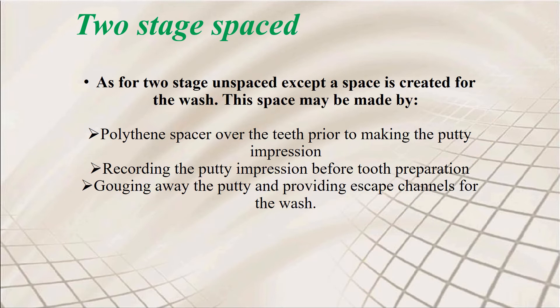Coming to the third technique — the two-stage spaced technique. This is the same as the two-stage unspaced, except that a space is created for the wash. In the unspaced technique, you have putty and light body with no spacer. In the spaced technique, you place the putty on the tray, put a polythene spacer on top, press it against the mouth, let it set, take it out, and then apply the light body.